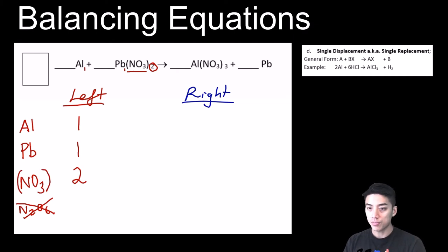So think of your polyatomics like its own thing, like its own unit. So think of them in terms of sets, and don't distribute that subscript. So likewise, again on this side, we actually have 3 sets of nitrate, and the aluminums and leads look like they're at 1. So we're fine there.